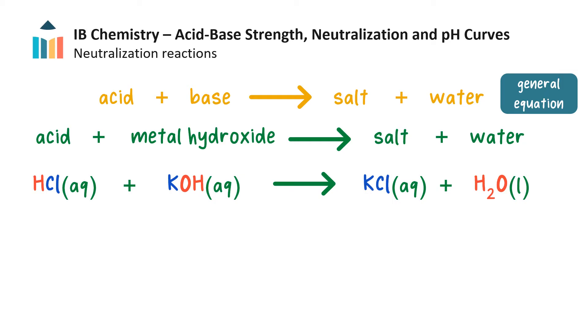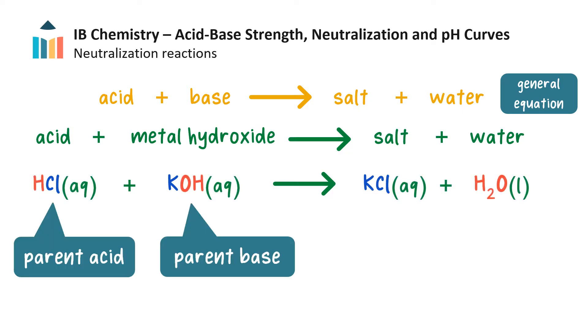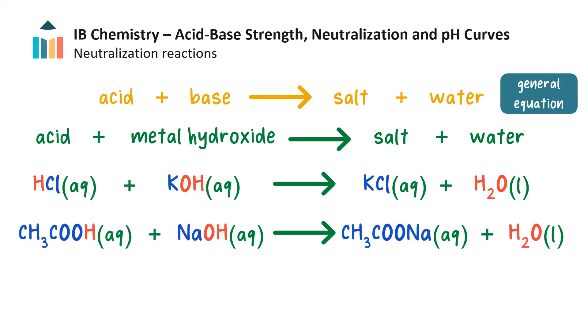For example, when hydrochloric acid and potassium hydroxide react, the products are the salt potassium chloride and water. Since the salt is made from components of both the acid and the base, we call hydrochloric acid the parent acid and potassium hydroxide the parent base of the salt potassium chloride. Here is another example of neutralization, where the organic acid ethanoic acid reacts with sodium hydroxide to produce the salt sodium ethanoate.